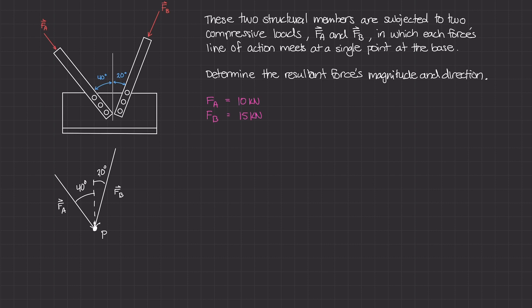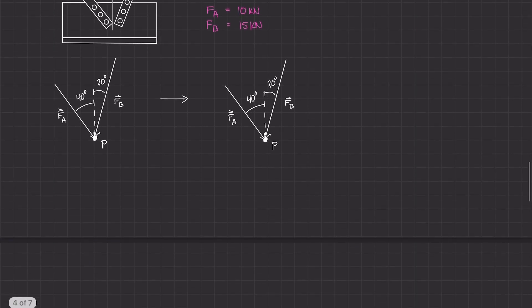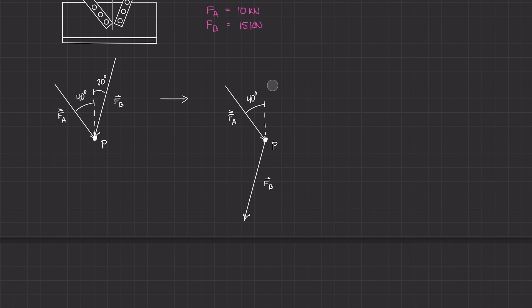Knowing this, the next step is to add the two vectors together to form a triangle comprised of the two forces plus the resultant force. I'll copy the diagram to the right. I'm going to add F-A plus F-B by taking the tail of F-B and adding it to the tip of F-A. Now I can draw the resultant vector going from the tail of A to the tip of B.